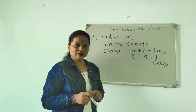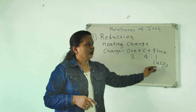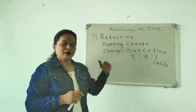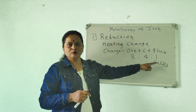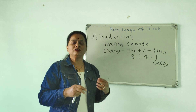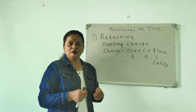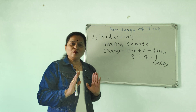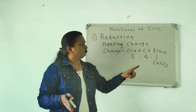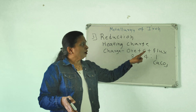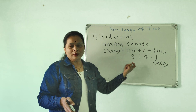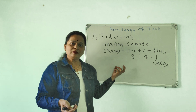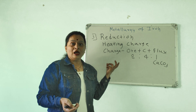We also add flux — calcium carbonate (limestone). The role of flux is that if impurities remain after the physical or chemical process, the flux combines with those impurities. Carbon is the reducing agent and removes the oxide form.